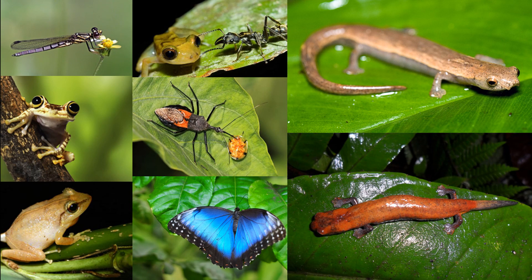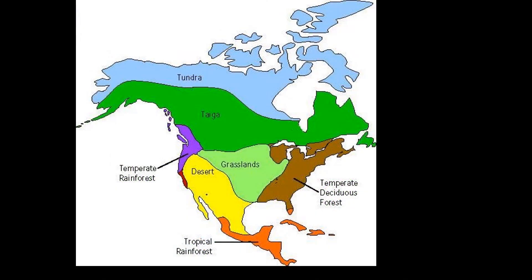We have learned all major biomes or geoclimatic regions of North America: tundra, taiga, grassland, desert, tropical rainforest, temperate rainforest, and temperate deciduous forest.